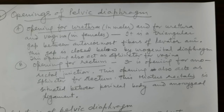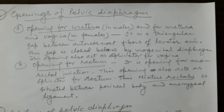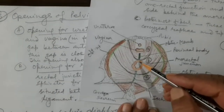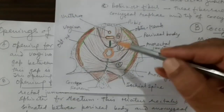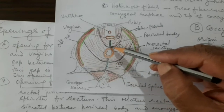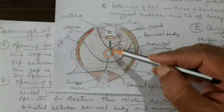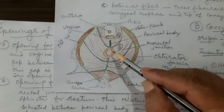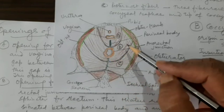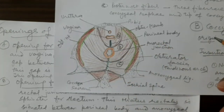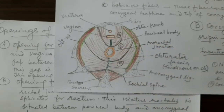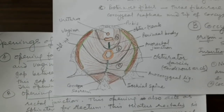The hiatus rectalis is situated between the perineal body anteriorly and the anococcygeal raphe or anococcygeal ligament posteriorly. The rectum passes through this opening. The puborectalis muscle, forming a sling around the anorectal junction, also acts as a sphincter at the anorectal junction.